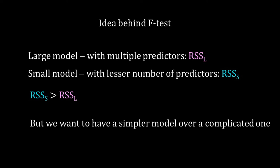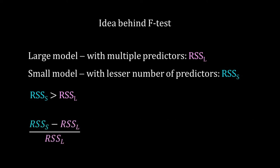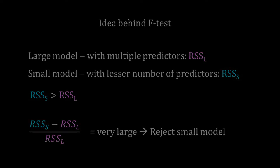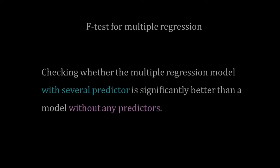To help decide whether to choose the small model over the large one, I define a measure: RSS of the small model minus RSS of the large model, divided by the RSS of the large model. This measure estimates how big the error in the small model is relative to the error of the large model. If this measure is very big, we should reject the small model and go for the large one. I will use this idea of comparison between a small and a large model in the F-test.